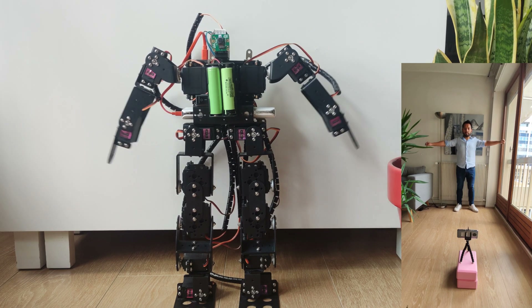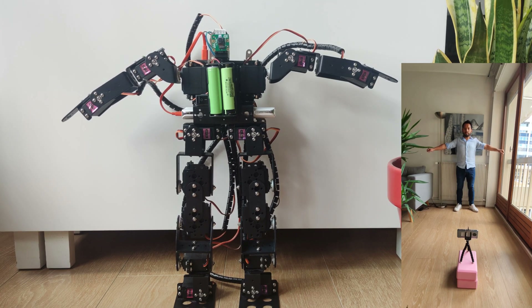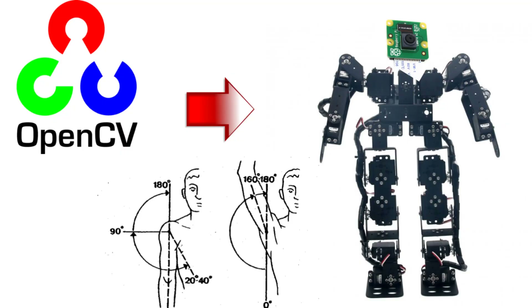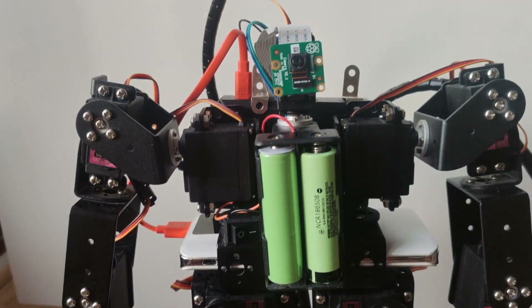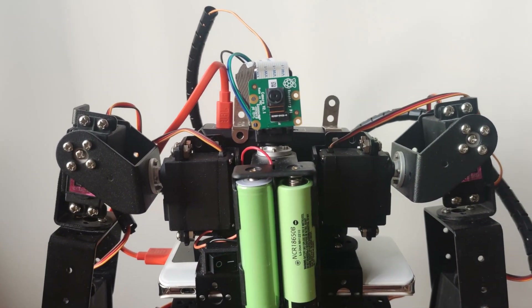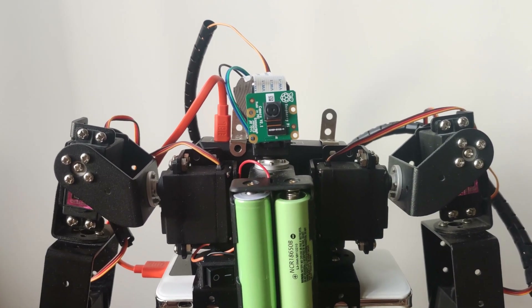Let's get started. Hello everyone, this is a simple project. I'm going to explain to you how to use OpenCV and get the angle to move in real time this humanoid robot.